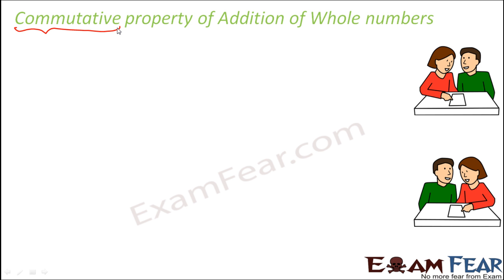Now here we will see what kind of exchange happens in commutative property. Can you guess something about the commutative property looking at the picture on the screen? In the first picture you see that the girl is sitting on the left and the guy is sitting on the right. In the next picture, their positions are exchanged — now the guy is sitting on the left and the girl is sitting on the right. So they have just exchanged their positions.